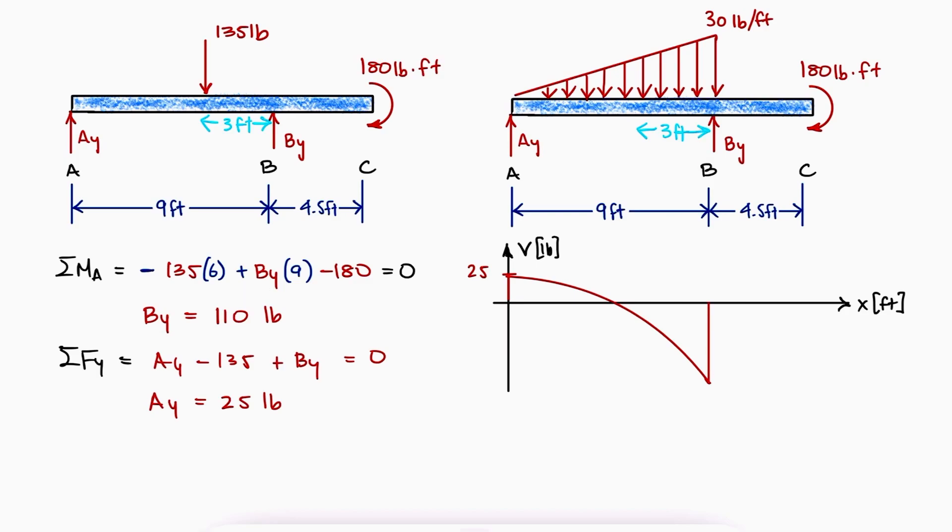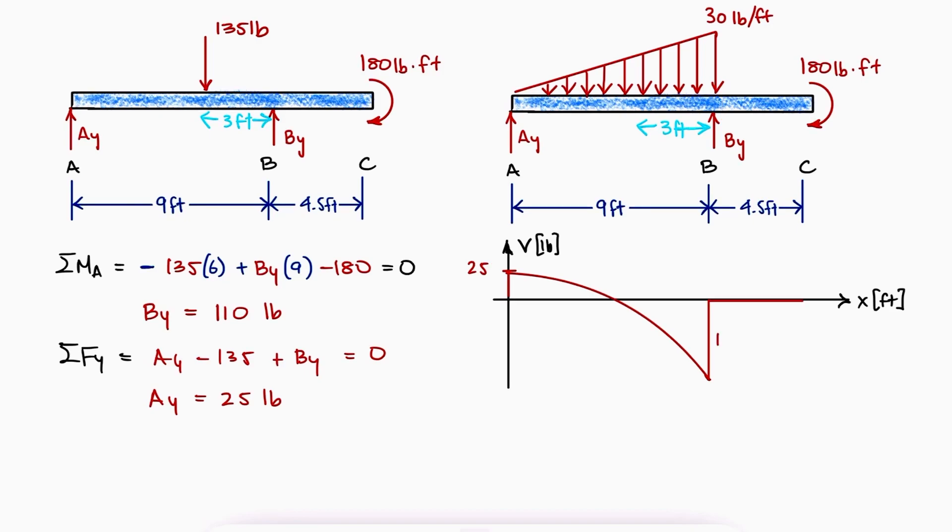Since there are no external shear forces between B and C, and the shear must be 0 at C, we know that the value at B must be minus 110.